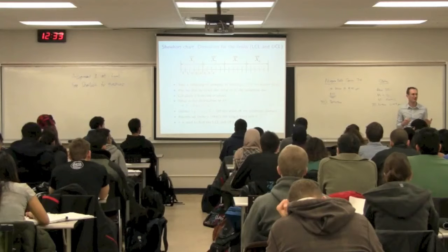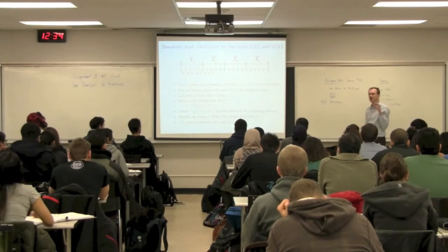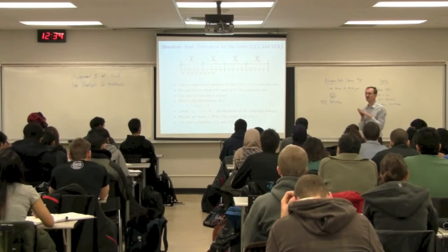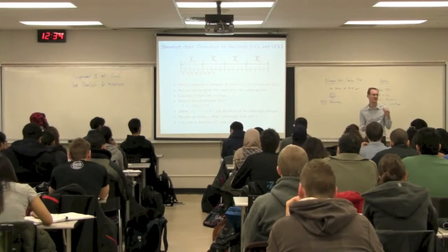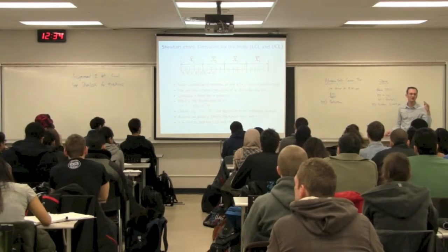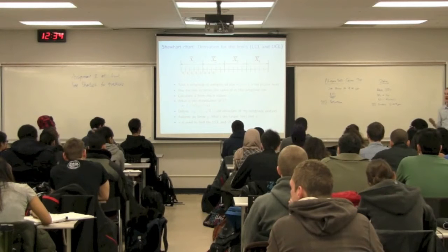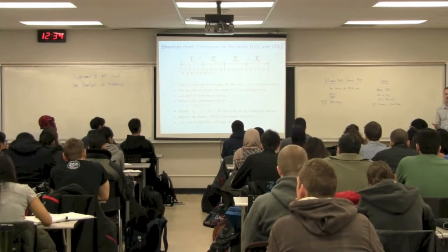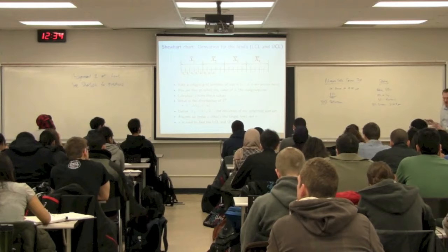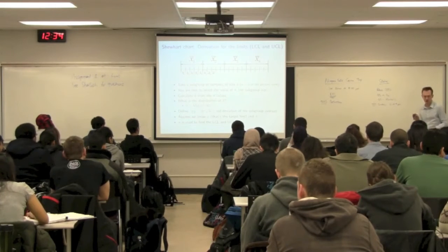So the bigger sigma is, the wider our control limits need to be — it makes intuitive sense. A process that's not producing consistent product, but producing product with a high degree of variability, means wider limits. Otherwise, if you had narrow limits, you'd be flagging all the time — things are not in control. So we're going to talk about how you judge the control limits, whether they're successful or not.